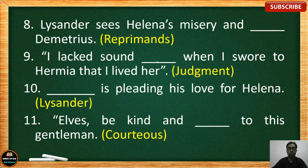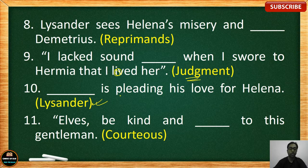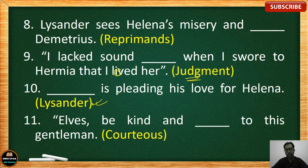Number 9: 'I lack sound blank when I saw to Hermia that I loved her.' The correct answer is 'judgment' — I lack sound judgment when I said to Hermia that I loved her. Number 10: blank is pleading his love for Helena. The correct answer is 'Lysander,' because of the love juice applied to his eyes creating a cross-connection — it is a messy and confusing situation in the story, but if you remember the main events you will manage.